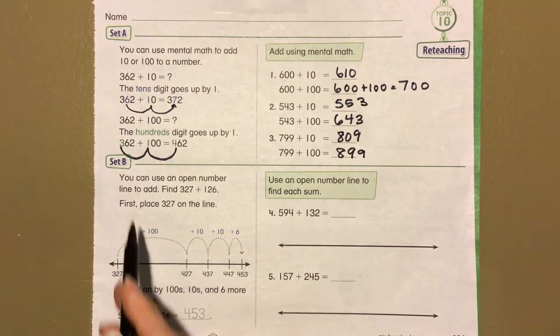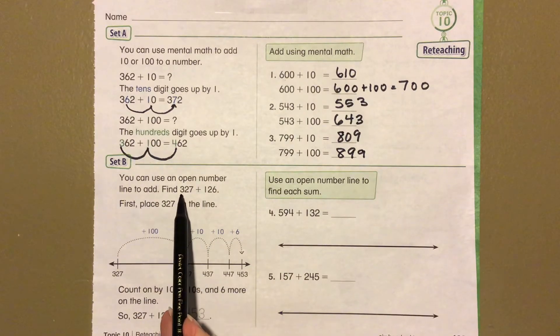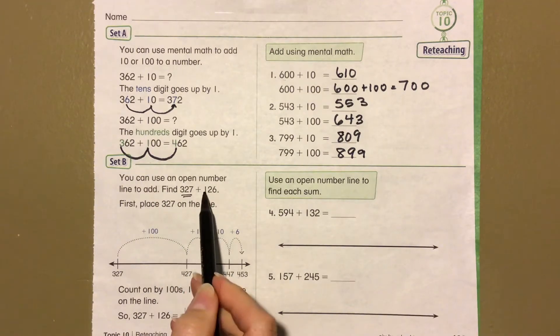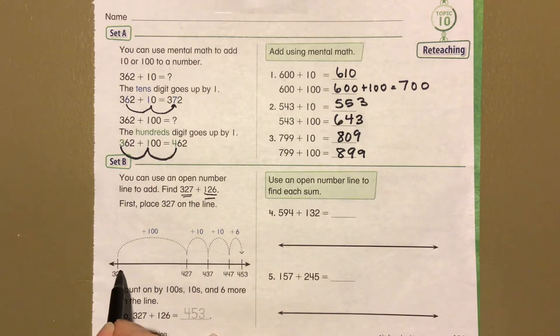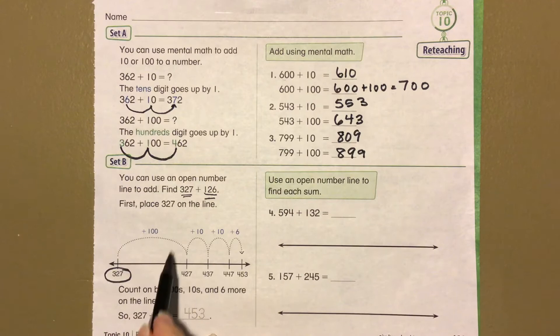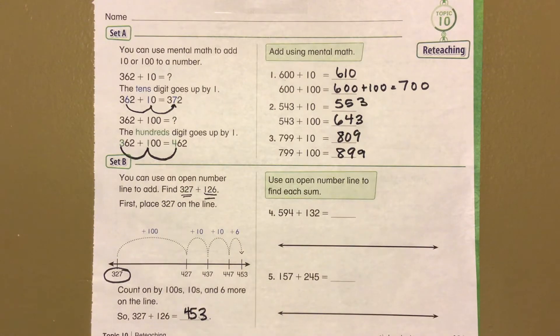Okay, set B. You can use an open number line to add. First find 327 plus 126. So first you place 327 on the number line. Count by hundreds, tens, and six more on the line to get your sum of 453. We're going to use our open number line two times on this one.